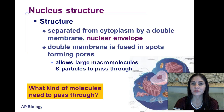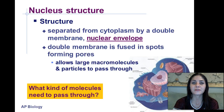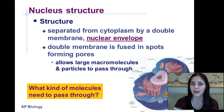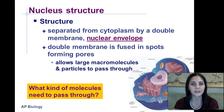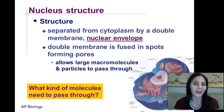The nucleus is separated from the cytoplasm by a double layer membrane called the nuclear envelope. The double membrane is fused in spots, and that forms pores. The pores allow large macromolecules and particles to pass through. So what kind of molecules do you think are going to need to pass through the nucleus? Think about the process of protein synthesis — what molecule has to move out of the nucleus after transcription and into the cytoplasm for translation into a protein? If you're thinking messenger RNA, then you're correct.